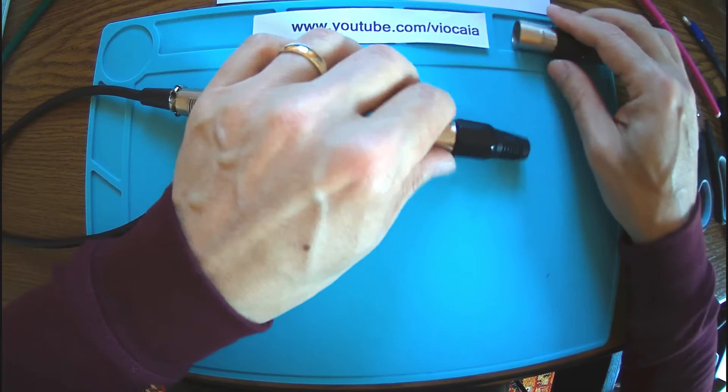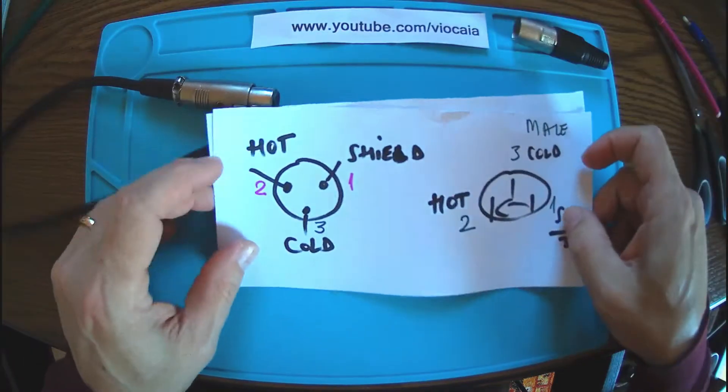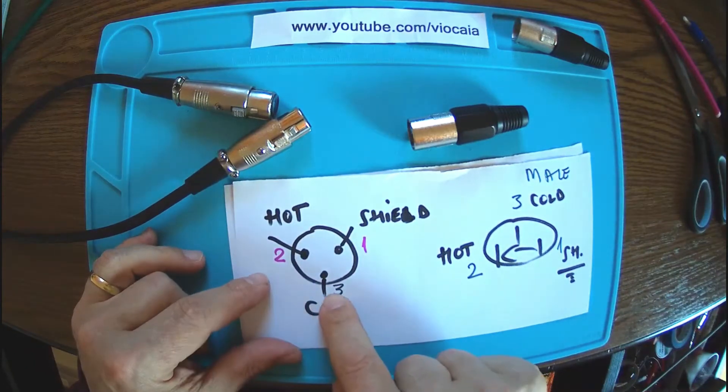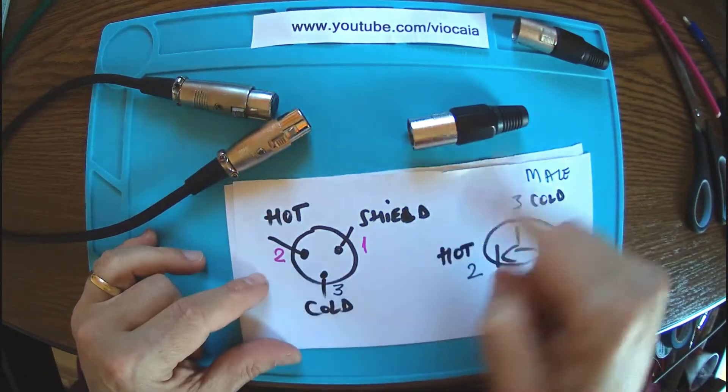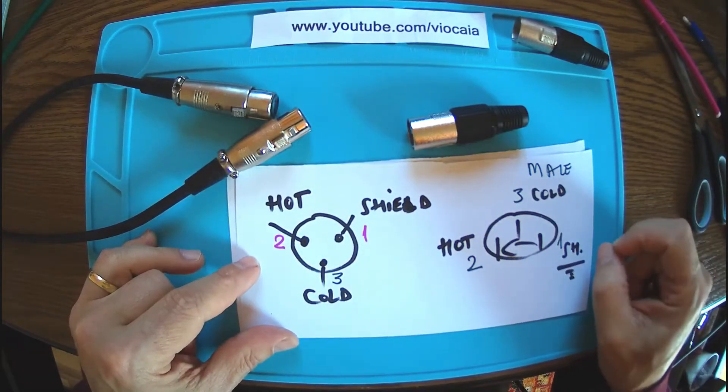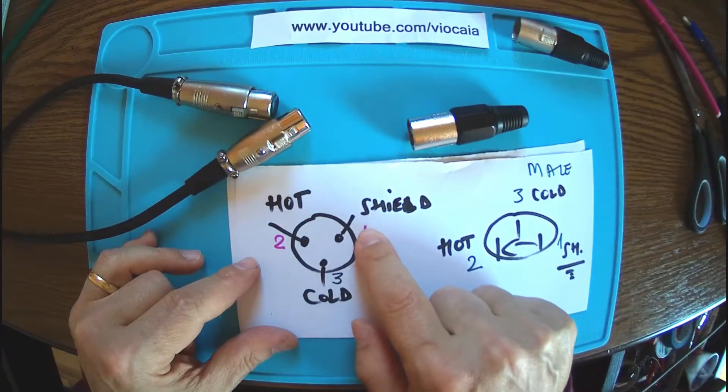So this is the schematic over here. It's very simple - we have three pins: one, two, and three. It's counterclockwise. On pin one we have the shield.